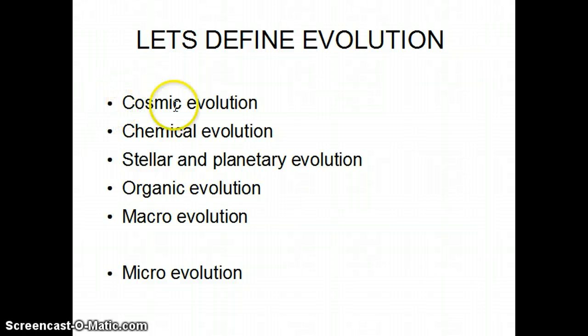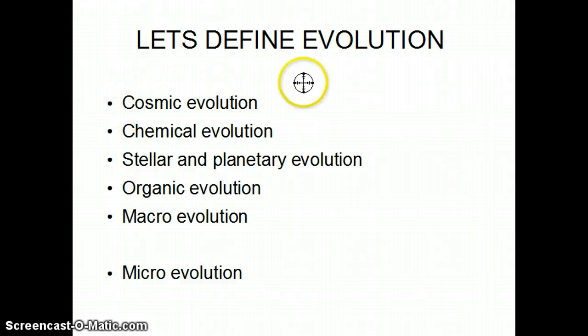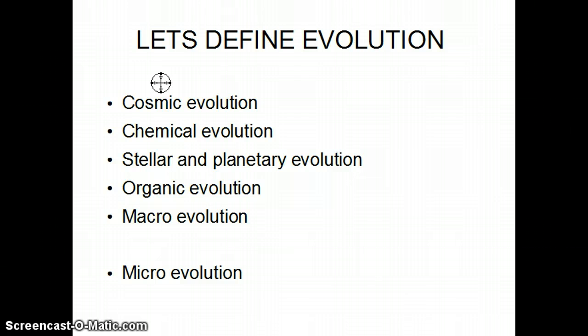Cosmic evolution is the first one — the Big Bang, the origin of time, space, and matter. Chemical evolution: they say hydrogen was produced in the Big Bang, but how do you get all the other elements? Stellar and planetary evolution: the Big Bang throws a bunch of dust out into the universe — how do you get stars and planets to evolve from that?